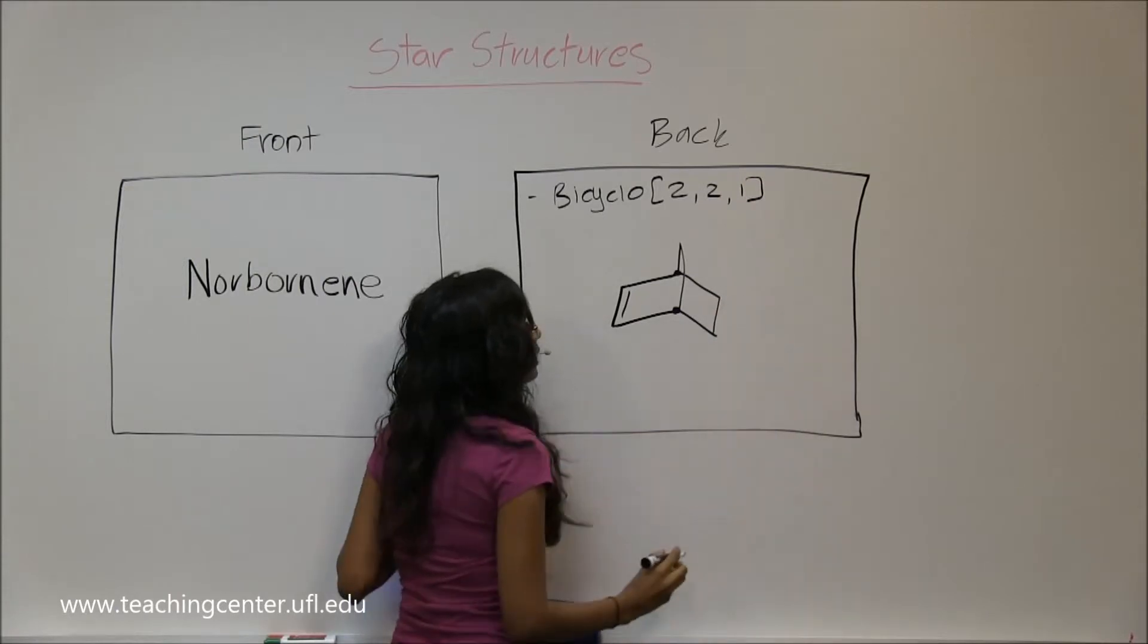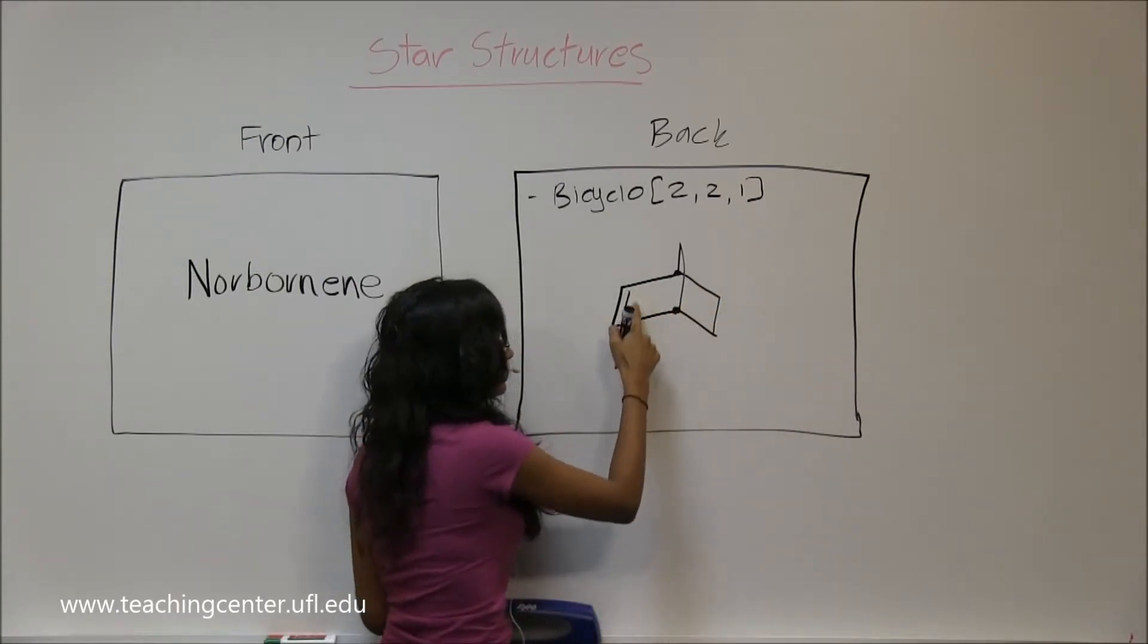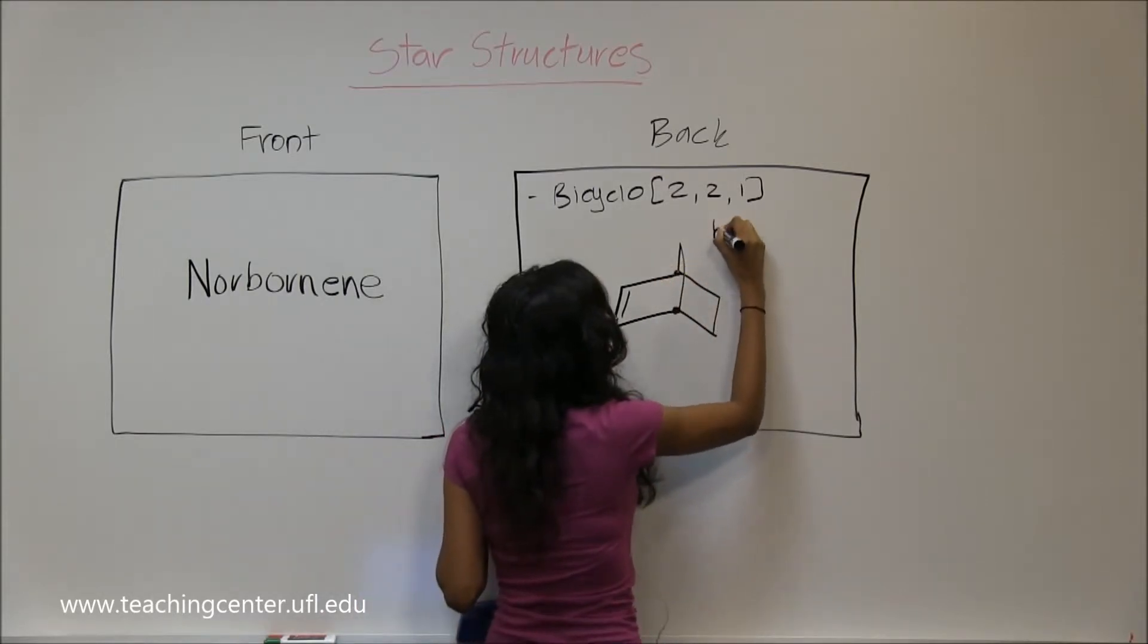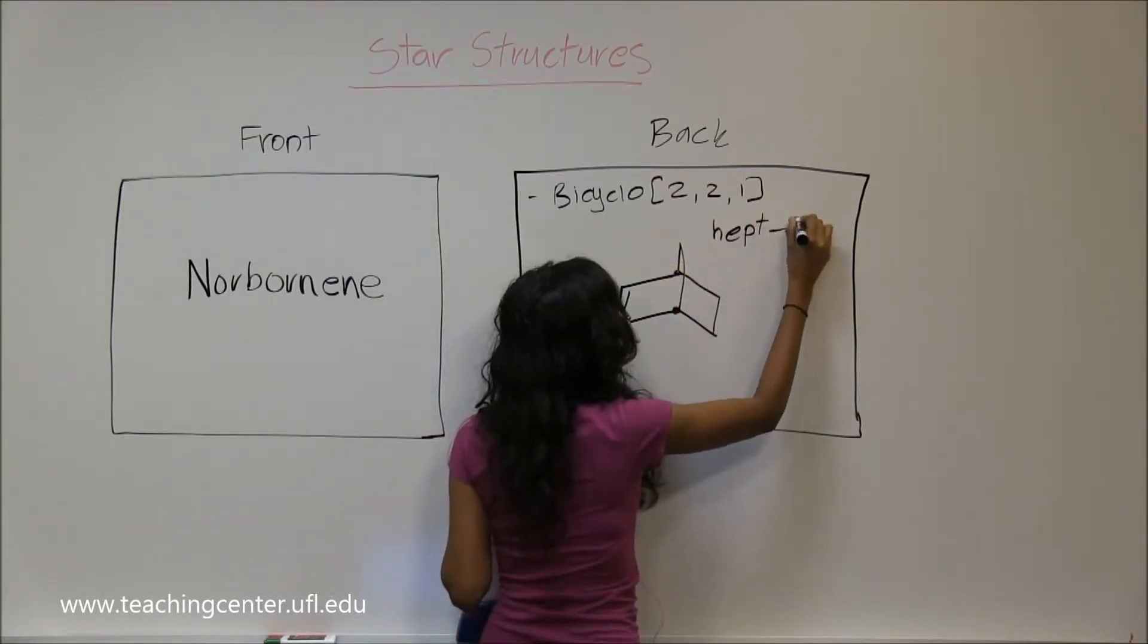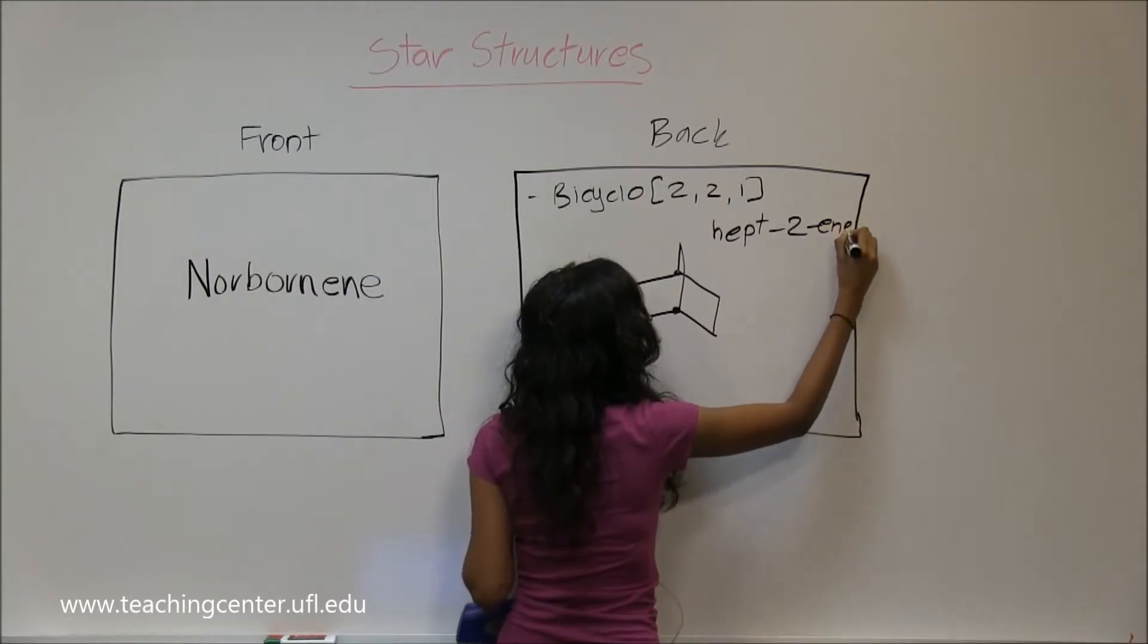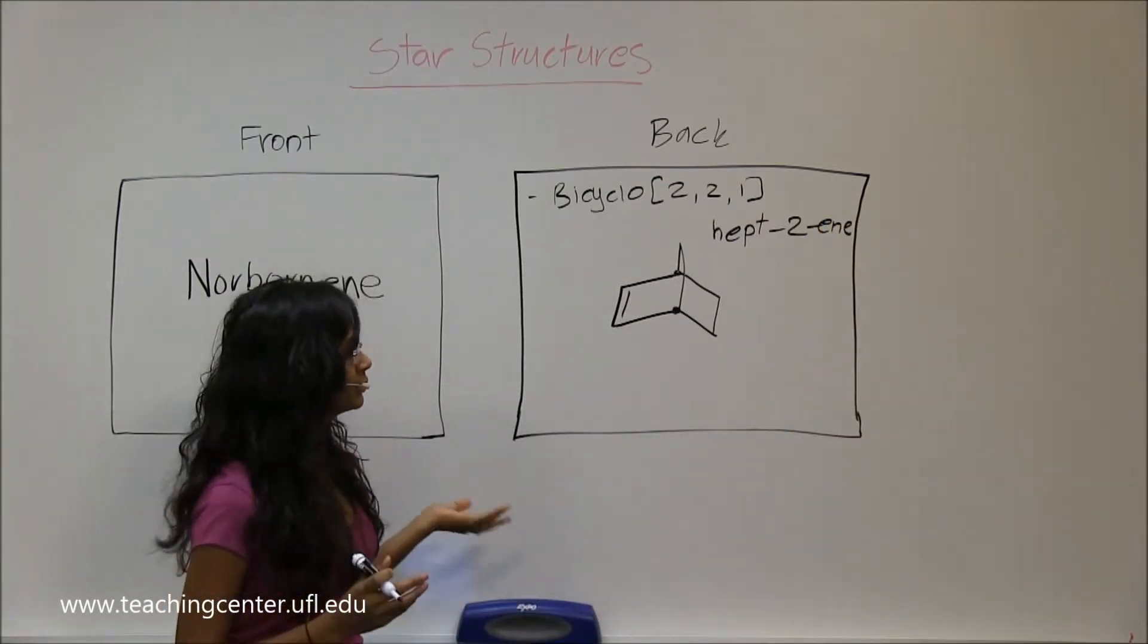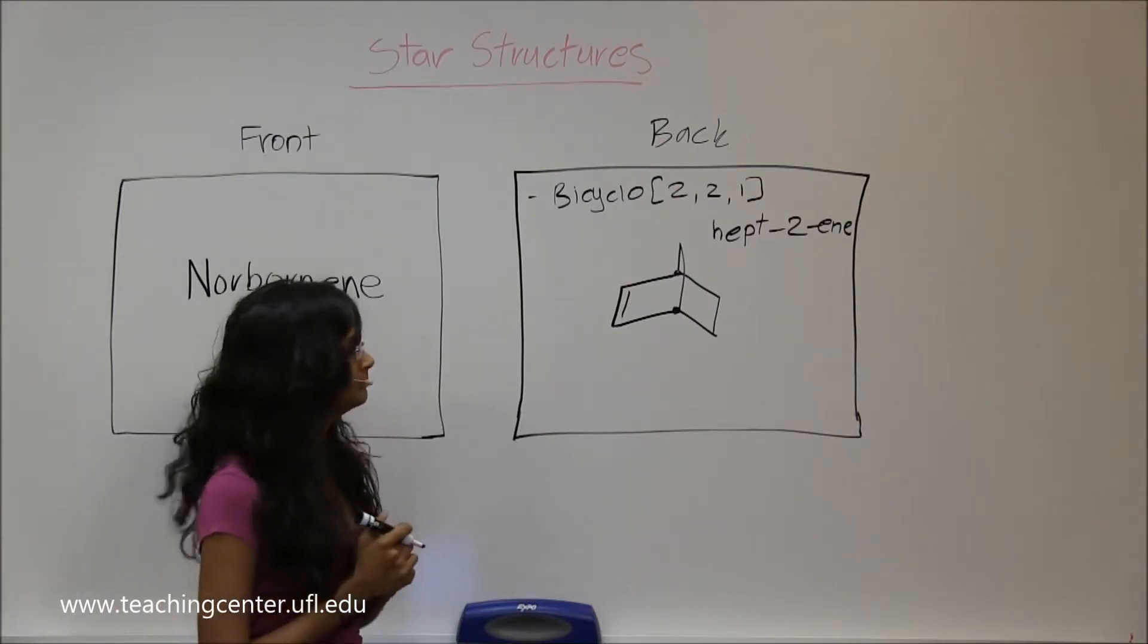And then you have seven carbons and an alkene, you always start from the bridgehead, so hept-2-ene. That's how you would give it an IUPAC name.